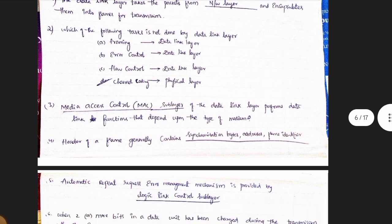3rd one: medium access control sublayer. The data link layer performs data link functions that depend upon the type of medium.